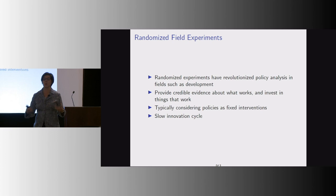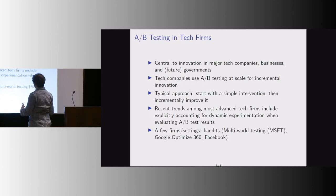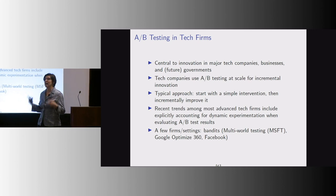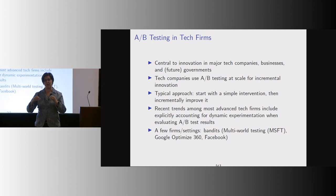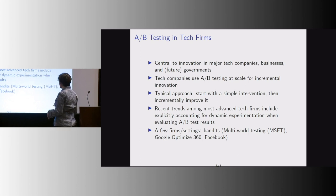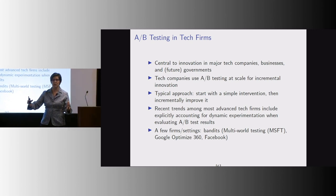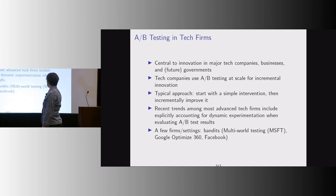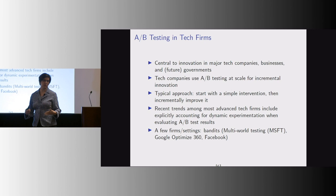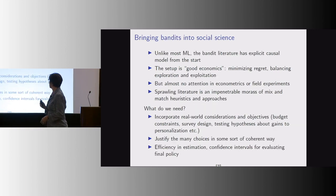What EdTech firms would rather do is be more nimble and learn faster. In tech firms, it's lots and lots of small experiments to make projects better, but it's still most commonly done as a sequence of individual randomized tests rather than fully dynamic experimentation. What bandits do is allow you to start with many arms, and as you learn which arm is working well, allocate more people to the arms that are working well and discard the ones working badly. Facebook uses this in production, and there are platforms at Microsoft and Google.